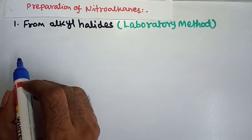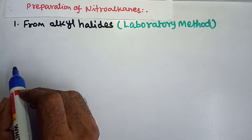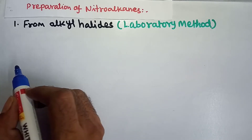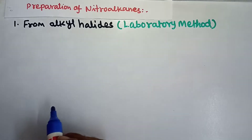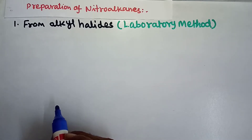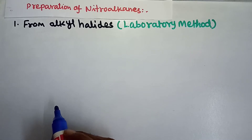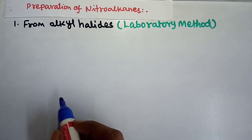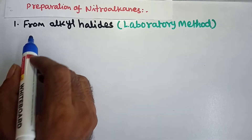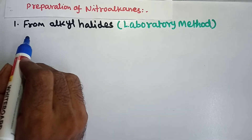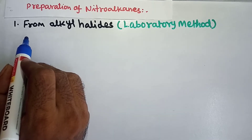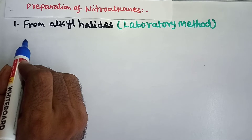In this method, we are taking the alkyl halides like alkyl bromides and alkyl iodides. The alkyl halides on heating with the ethanolic solution of potassium nitrite gives nitroalkanes. We are taking the alkyl halides like alkyl bromide and alkyl iodide.